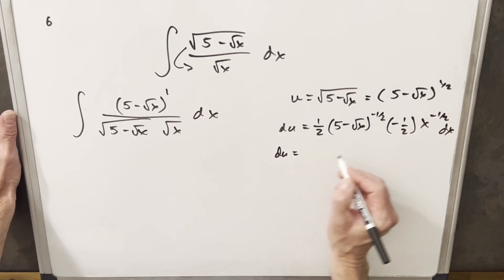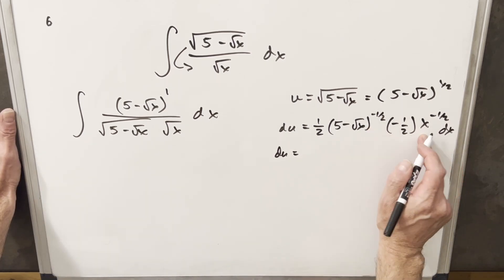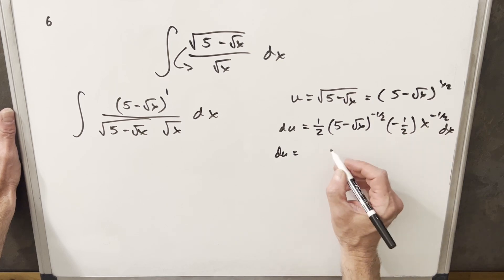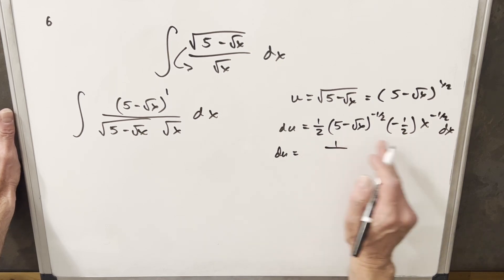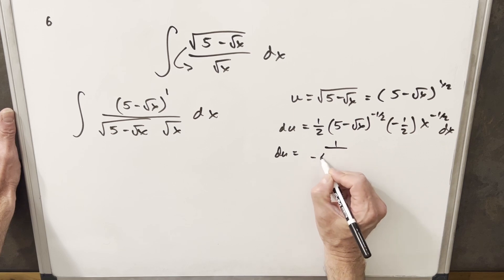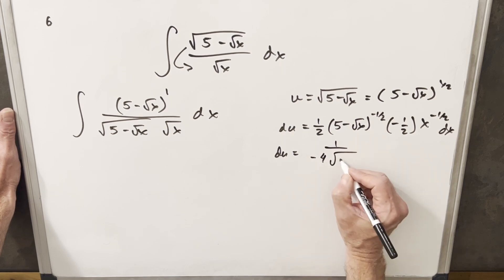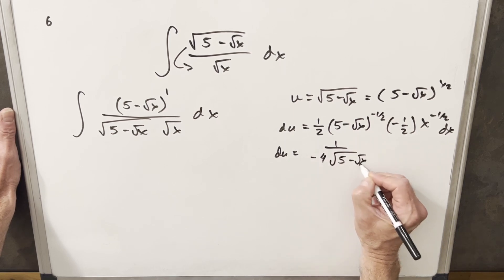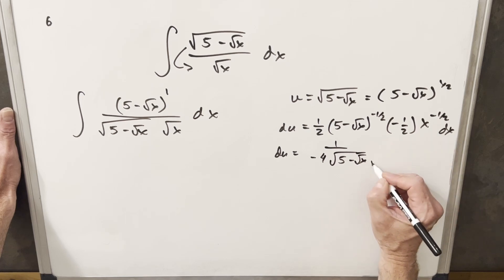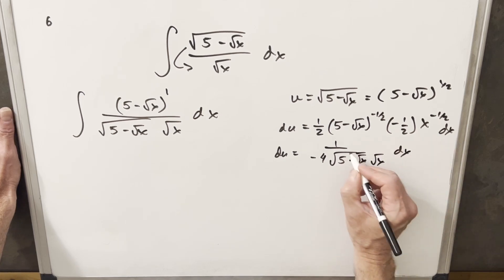And then I want to just clean this up a little bit because with the minus powers, all this stuff is going to be in the denominator. So this is going to turn out to be multiplying a half times a minus half. We're going to have a minus four here. This is going to give us a square root of five minus square root of x. And this is just going to be a square root of x here dx.